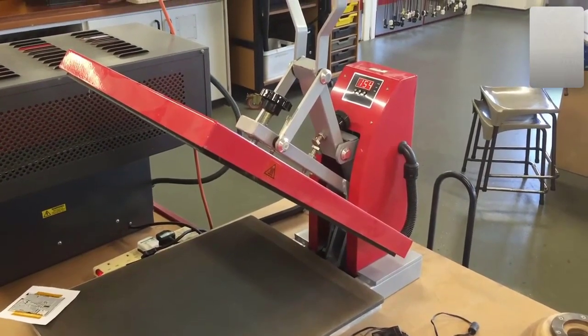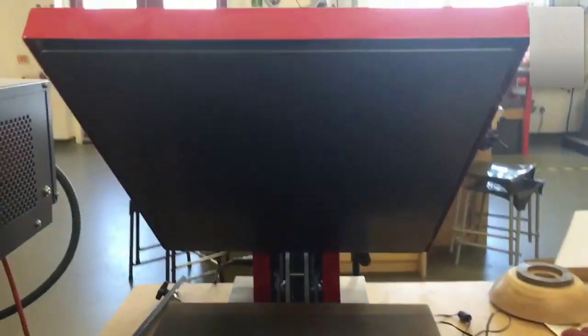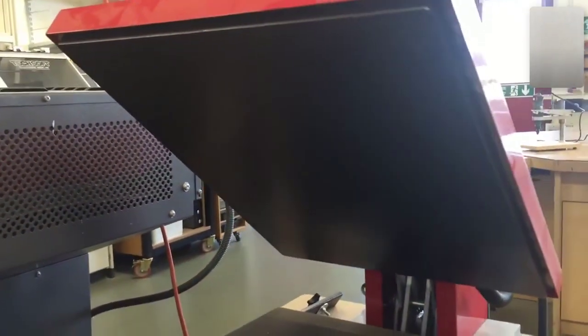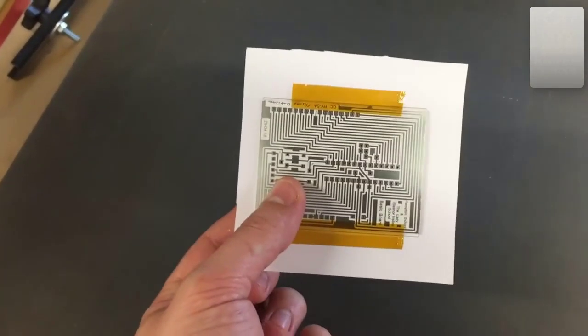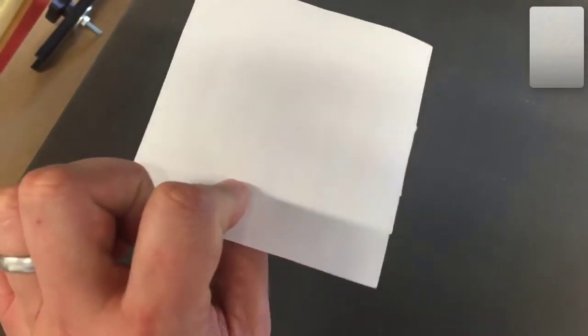So this is the heat press, it's just warming up for us now. What you can see is that there is a large heated bed here that's going to get up to 180 degrees, and then there is a soft surface onto which we are going to place our board with the printed image on top of it.